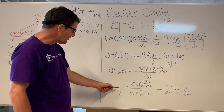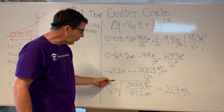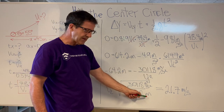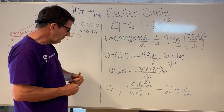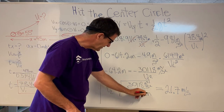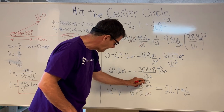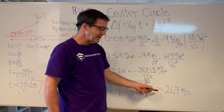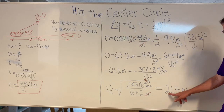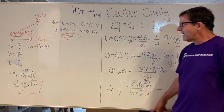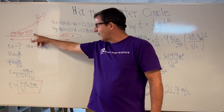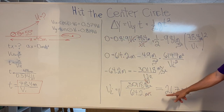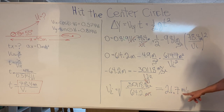The initial velocity equals the square root of 30,118 divided by 64.2. Looking at the units, one meter cancels, leaving meters squared over second squared under the square root, which gives meters per second. So the initial velocity is 21.7 meters per second. That means if you have a launch angle of 55 degrees and want the ball to travel 45 meters to hit the center circle, the ball must have an initial velocity of 21.7 meters per second.